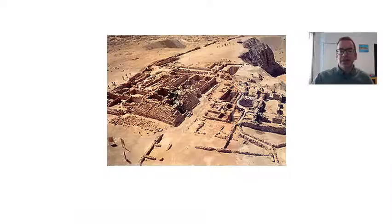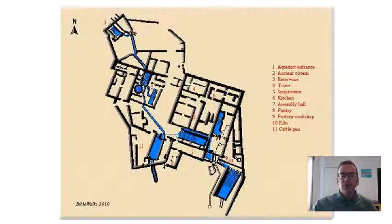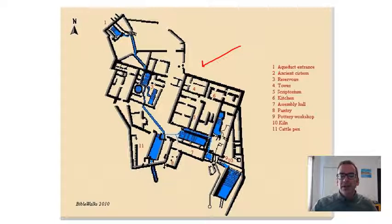This is the main area of Essene occupation — a site called Qumran. I have a series of slides here that will take you into more detail about the Essenes. This is an overview of the site, and you can stop the video to take a closer look at what's going on.